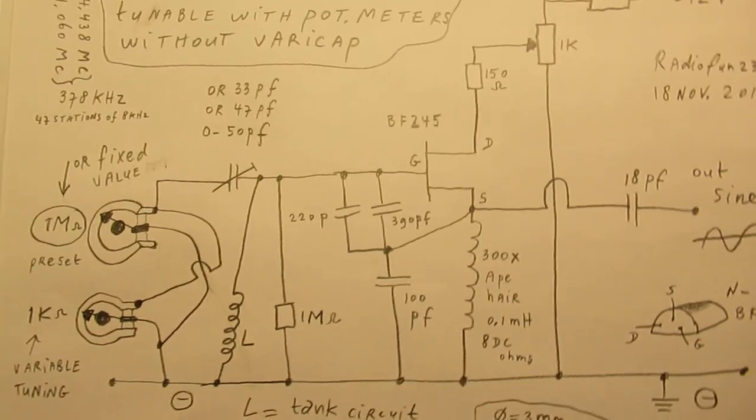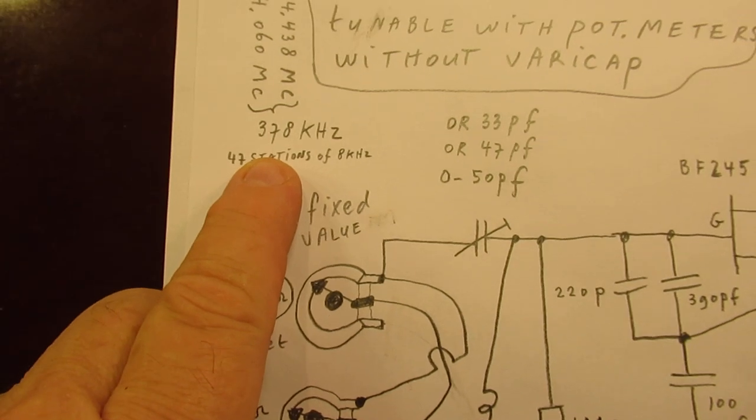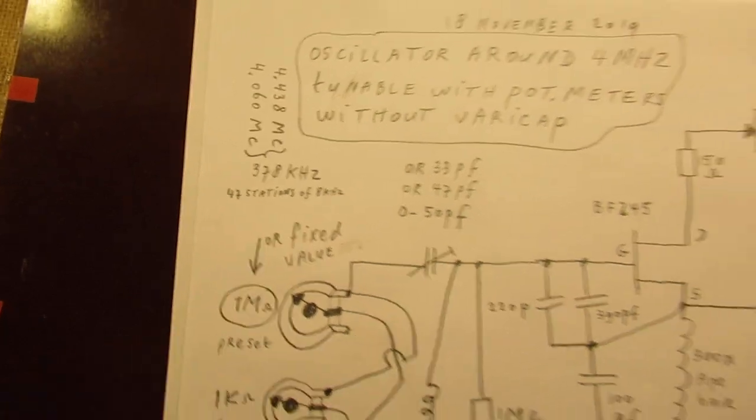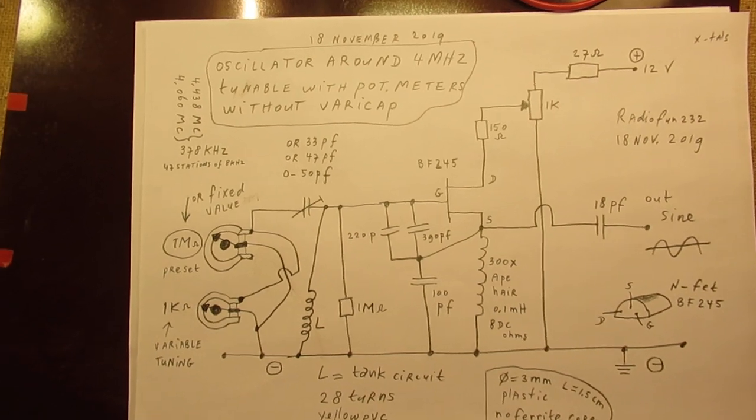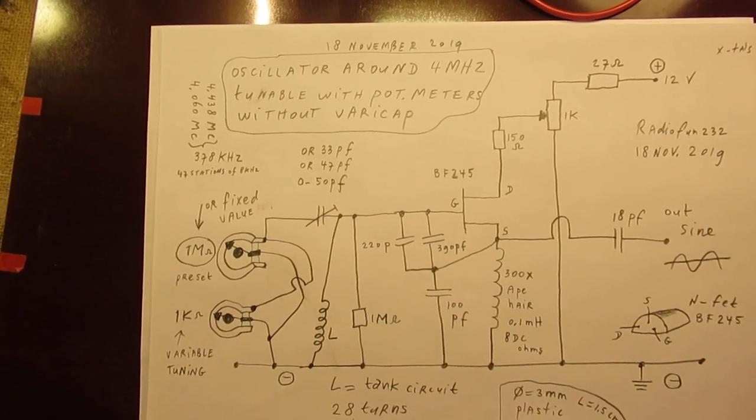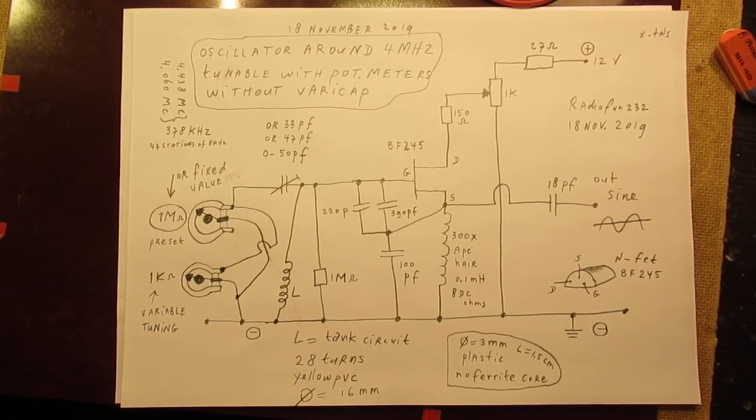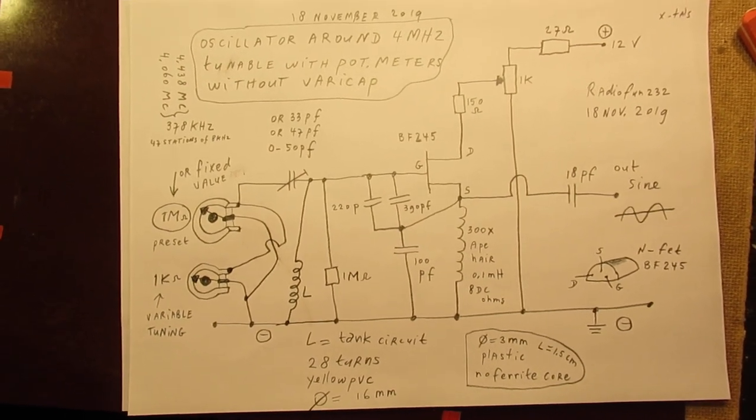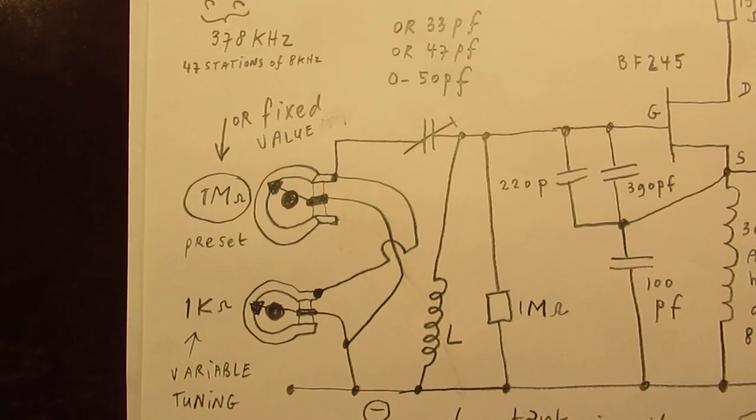Perhaps it's useful, the frequency variation is approximately 380 kilohertz on 4 megahertz. That's also important. When you have another frequency, resonance frequency of the oscillator, you will find another variation in the frequency that can be set with these two potentiometers.